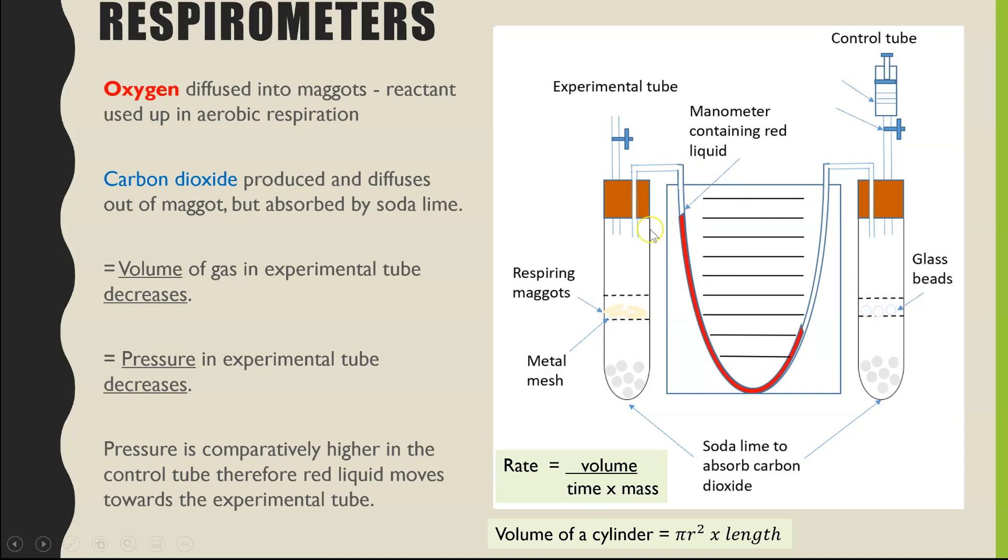So we need to know what is the area of the cross section of the manometer or this capillary tube, and the length is the distance that it traveled. So if we imagine each of these lines was representing five millimeters for us, it might have moved, if that was the start point, five, ten, fifteen millimeters. So once you've worked out the volume, then you are dividing that by the period of time you left it for.